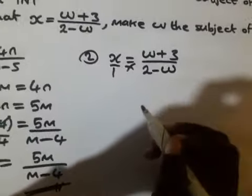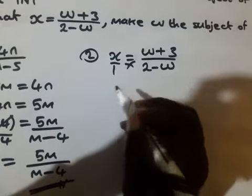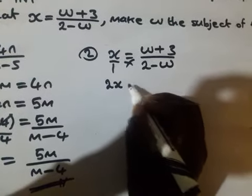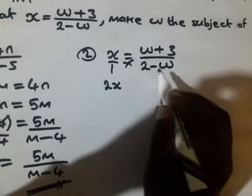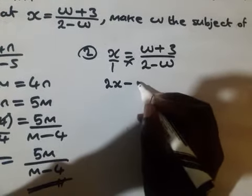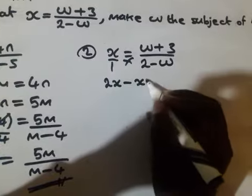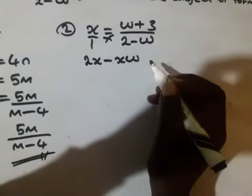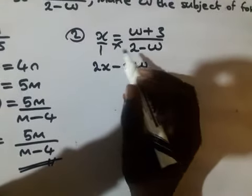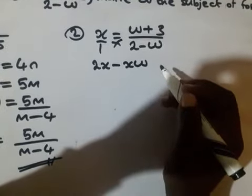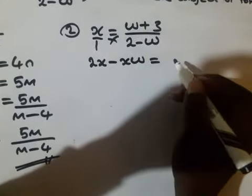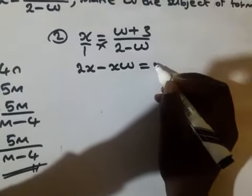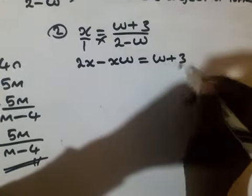This one now will be x times 2, which is 2x. Then x times negative w is negative xw. 1 times w plus 3, which is equal to w plus 3.